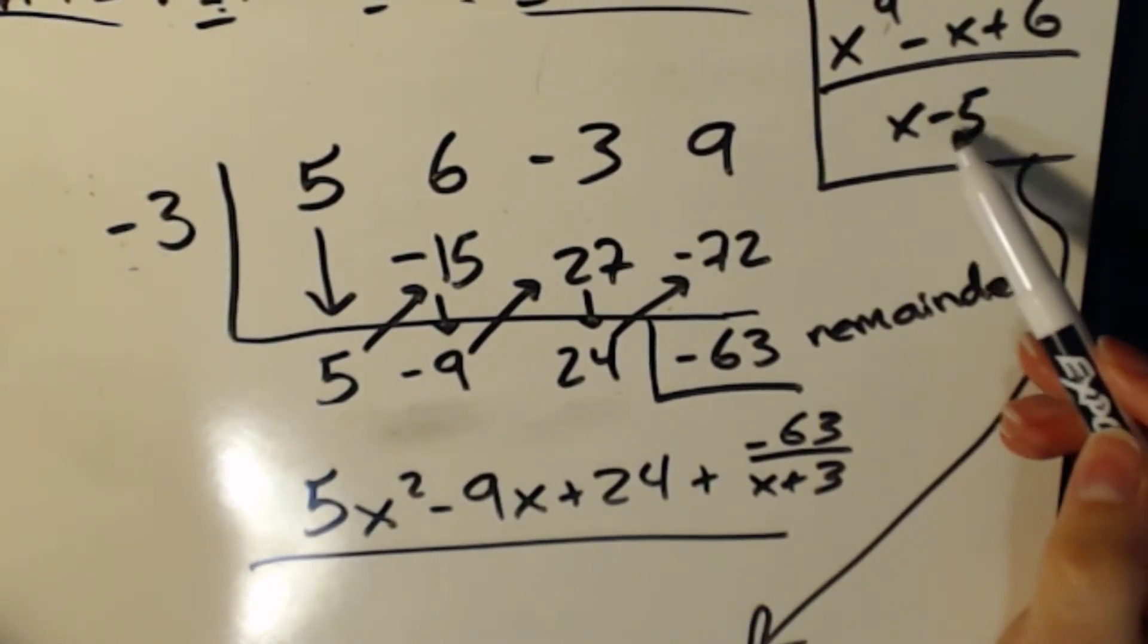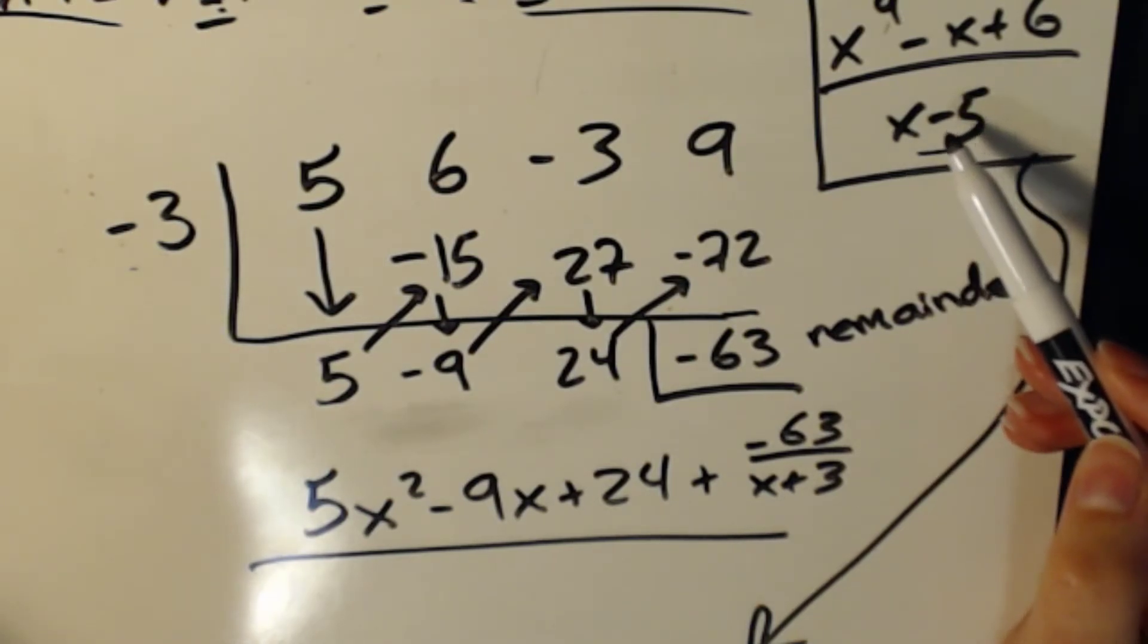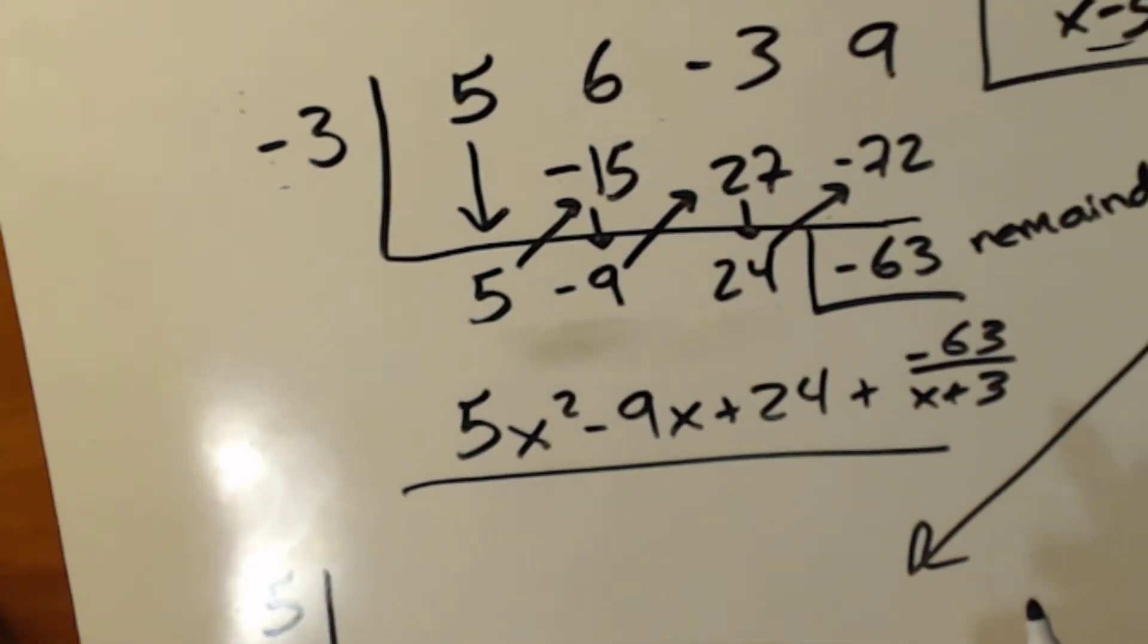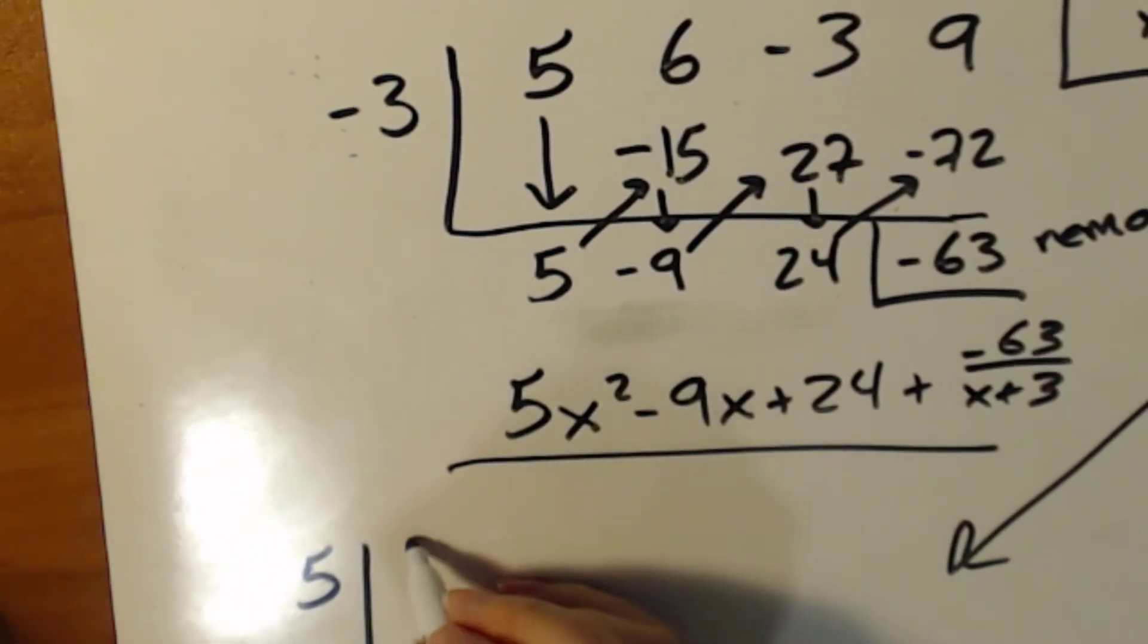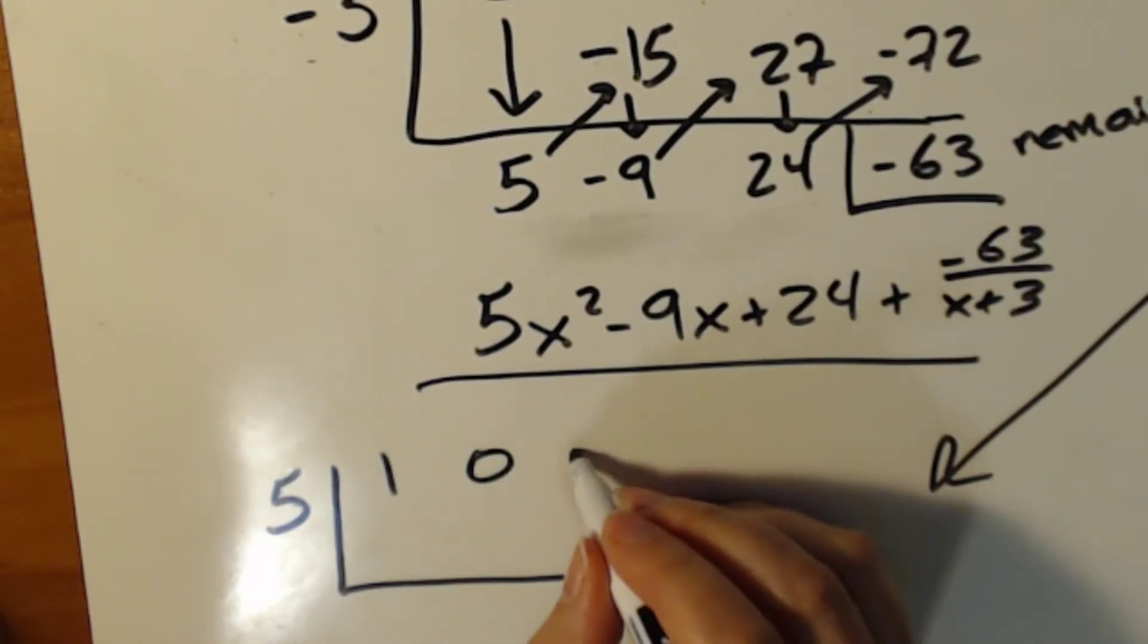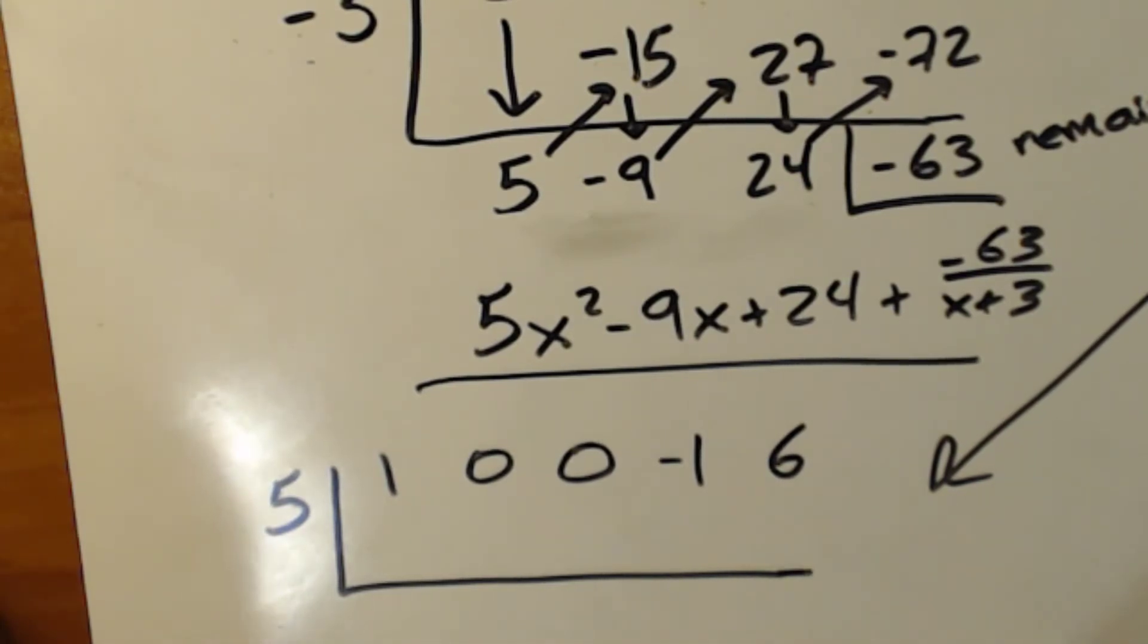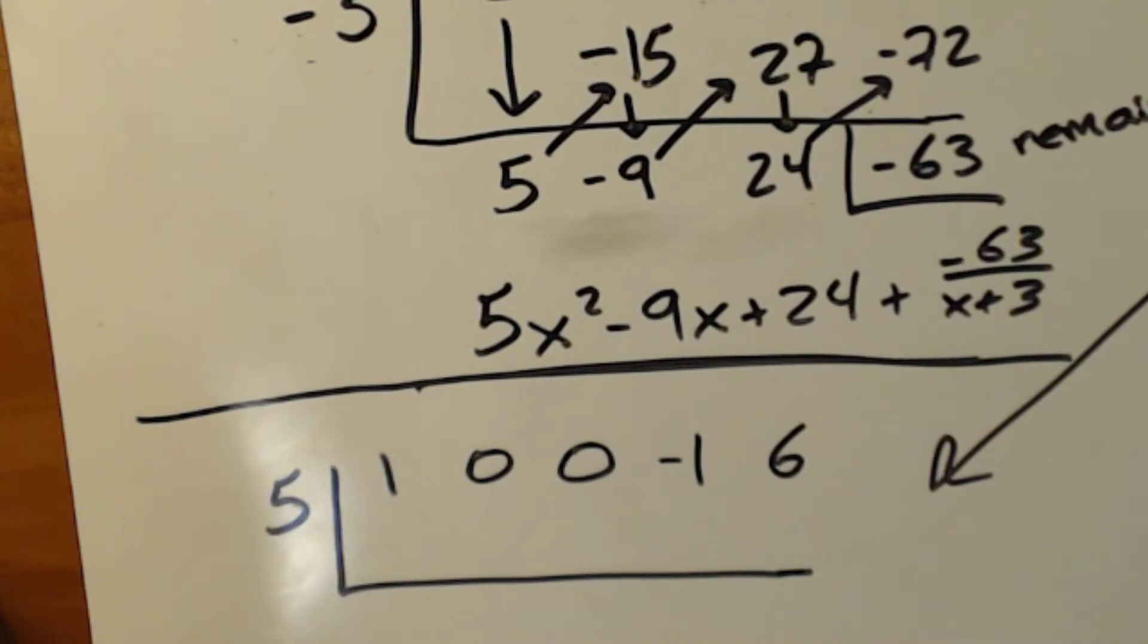Let's take this down here and do it. So remember, the first thing I want to do is I want to take this divisor and change the sign. So x minus 5, I'm going to put plus 5 on the outside of my box. And then on the inside of my box, I've got x to the fourth minus x plus 6. So my x to the fourth is going to be 1. My x to the third is going to be 0. My x squared is going to be 0. My x is negative 1. And my constant is 6.